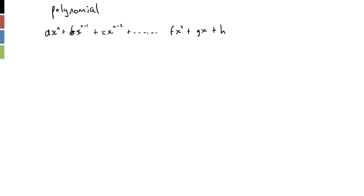We have a constant, a term with x to the power of one, a term with x to the power of two, then next up we would have a term with x to the power of three, and it keeps going on to whatever order we say. Polynomials have an order of whatever the biggest power is. So if the largest term was x to the seven, we'd say this is a seventh order polynomial.